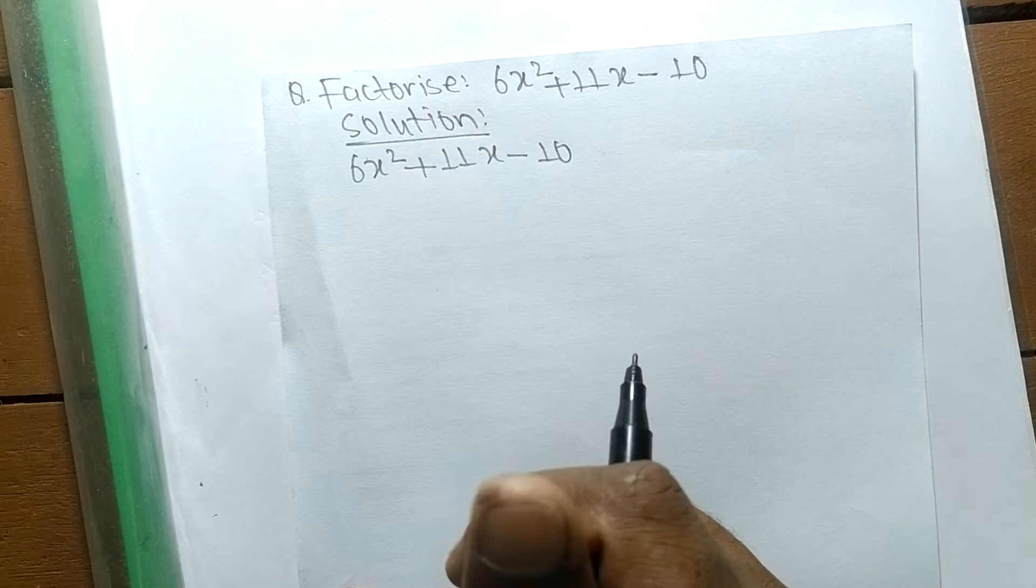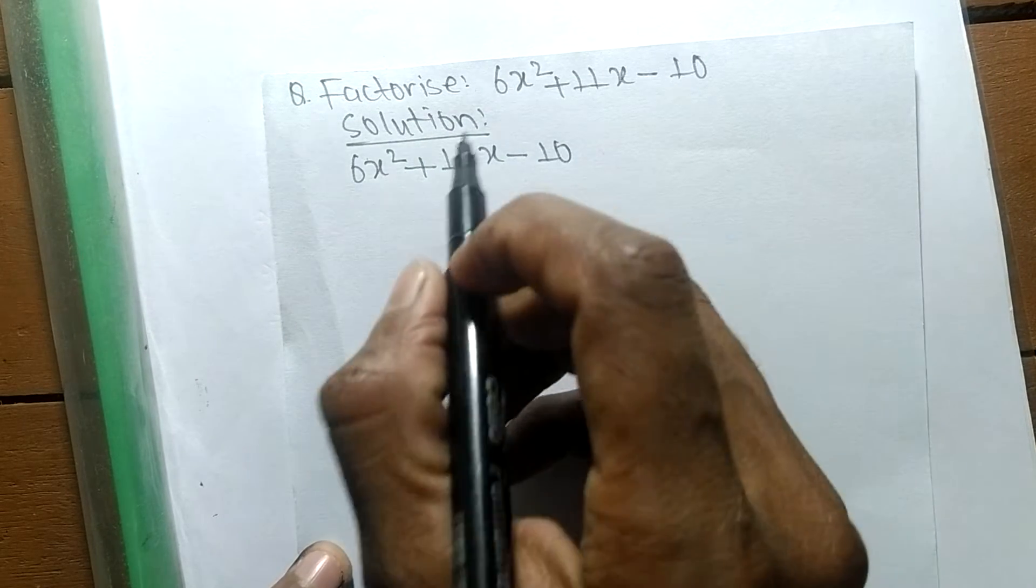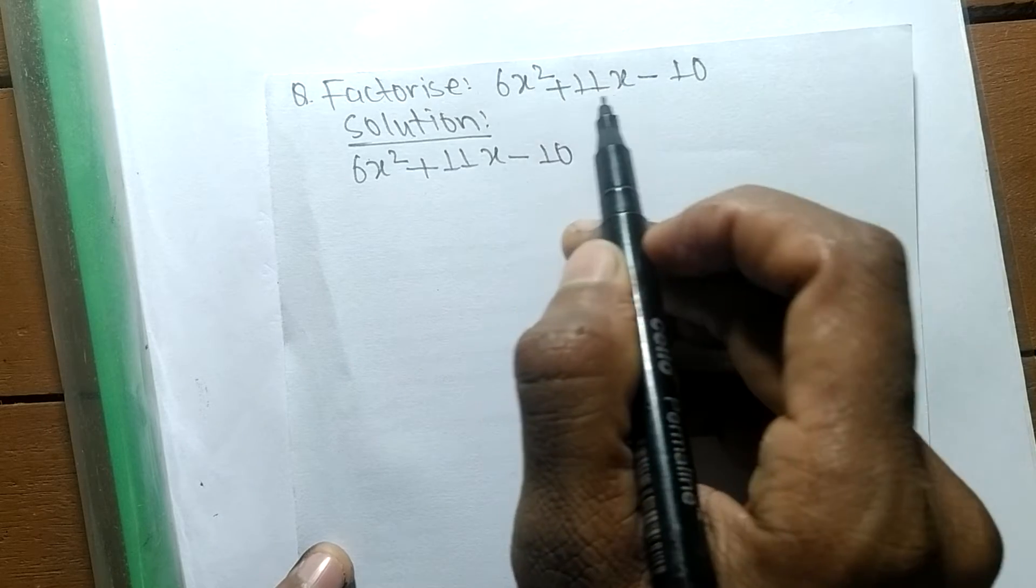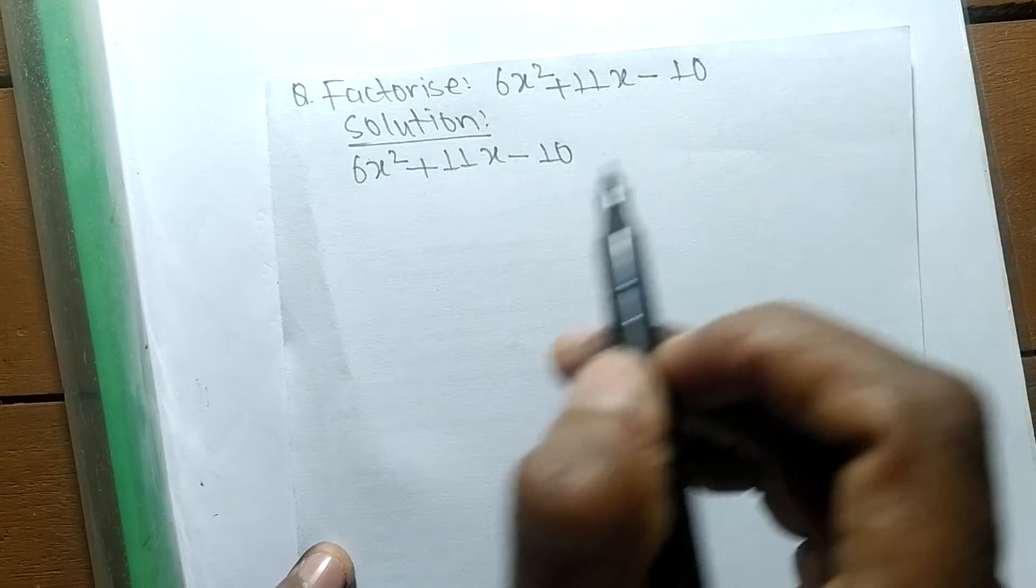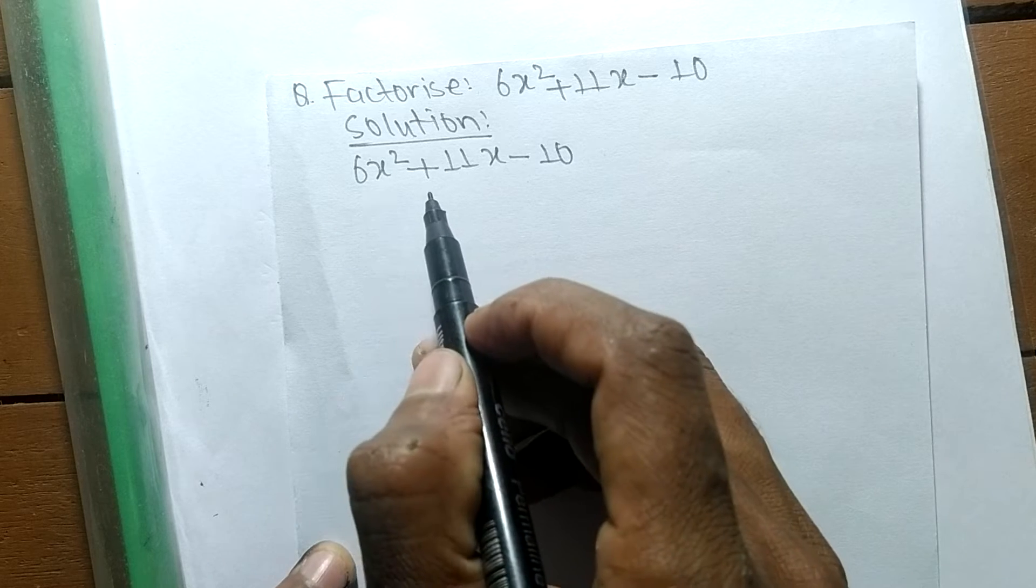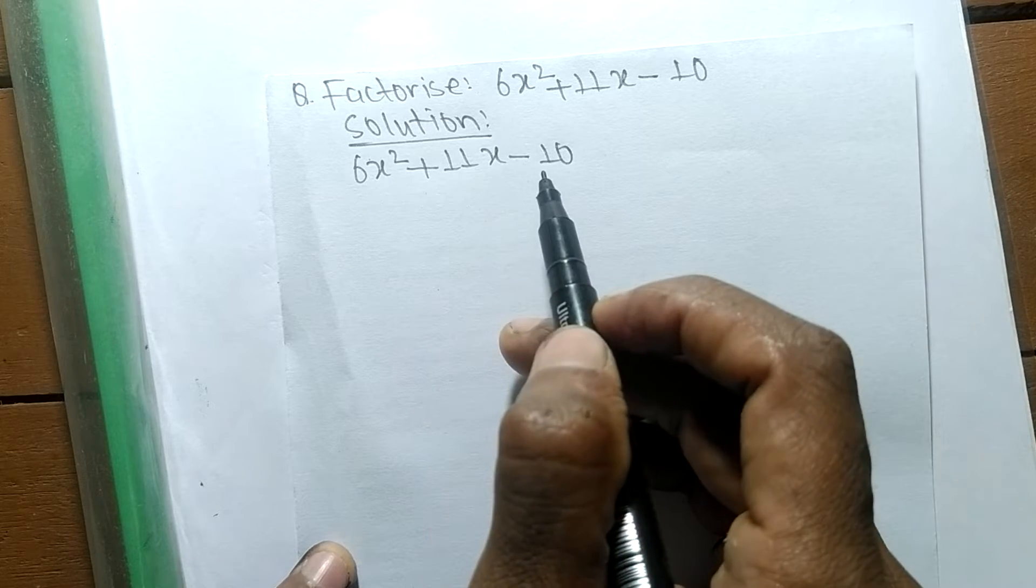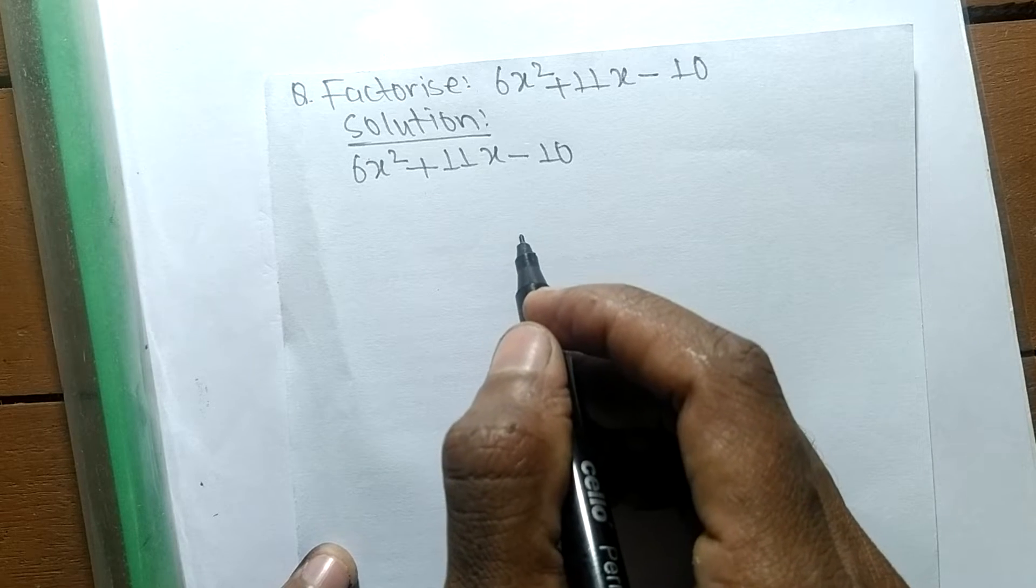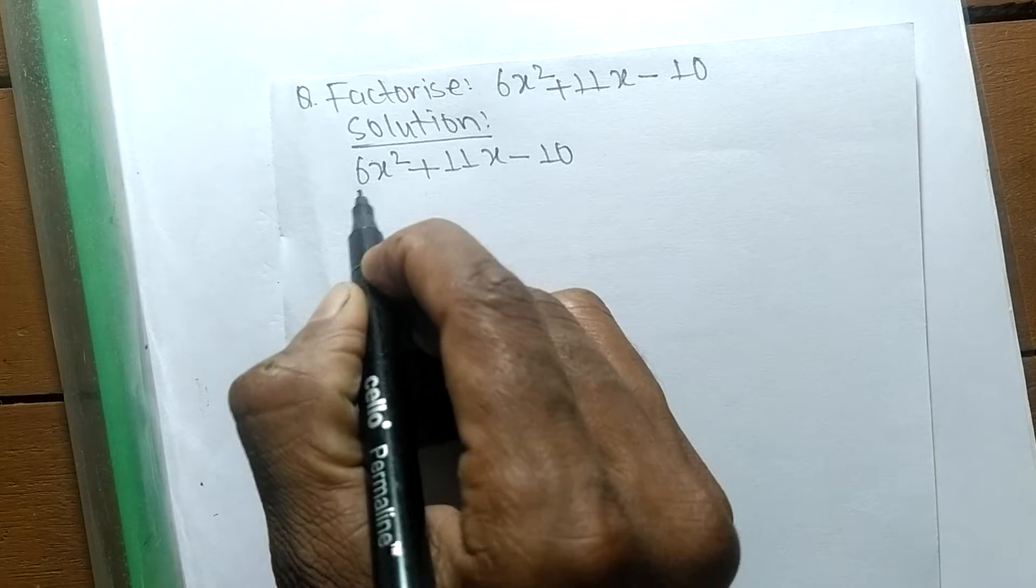So today in this video we shall learn to factorize 6x² + 11x - 10. For the solution of factorizing 6x² + 11x - 10, first we have to find out the prime factors of the first and last number.